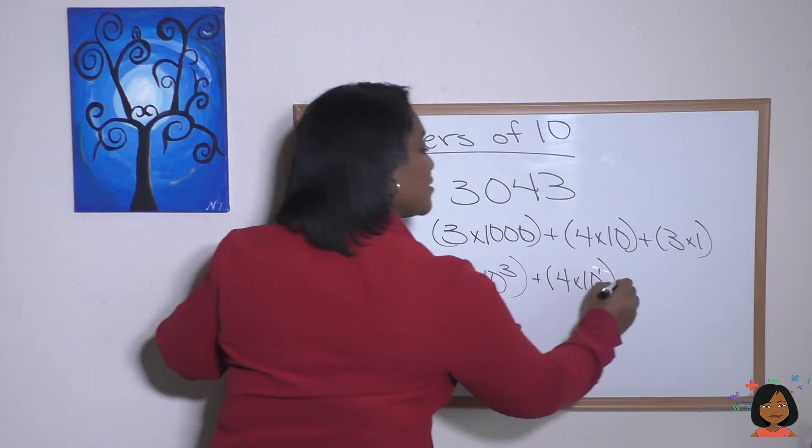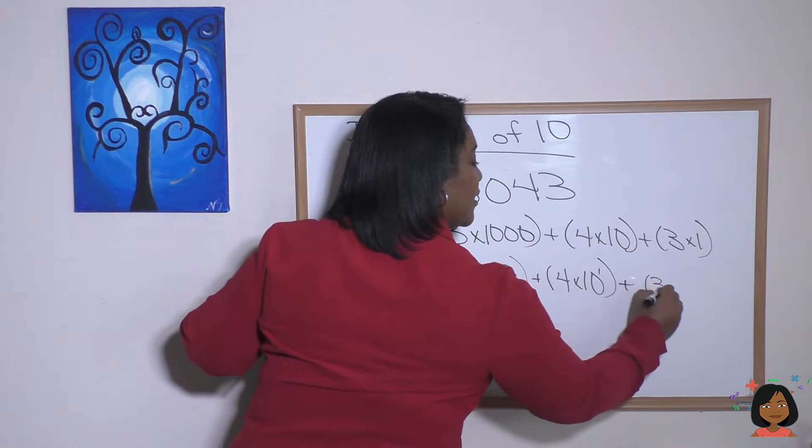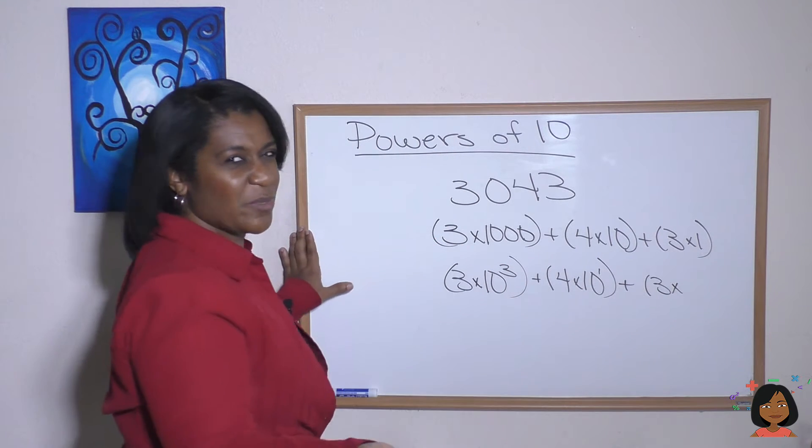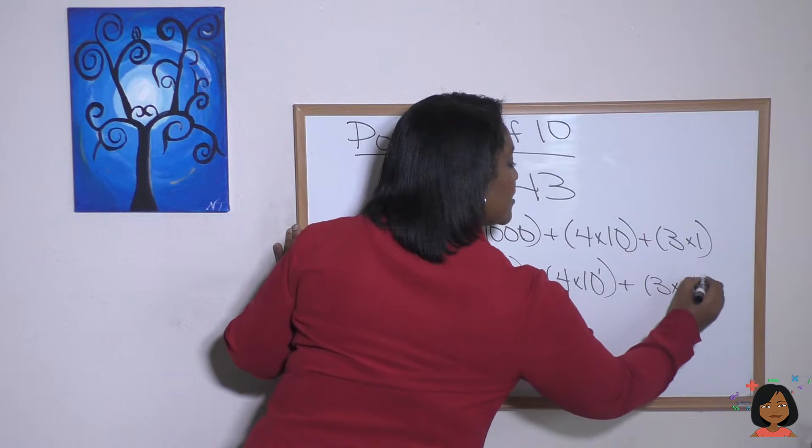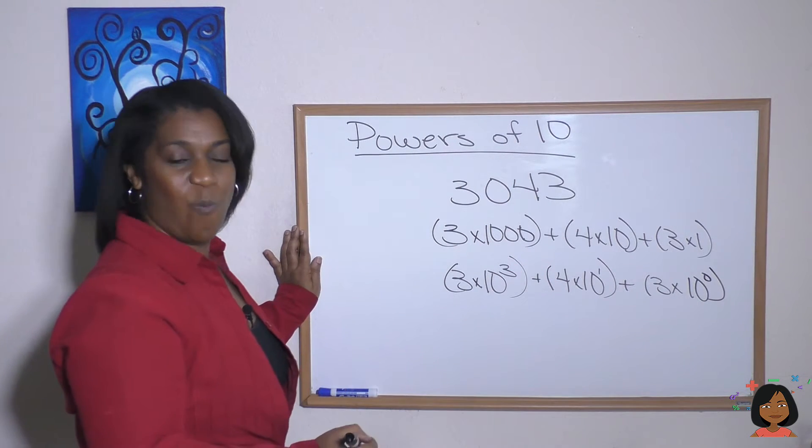plus 3 times. There's no zeros in the number 1, so we're going to say 10 to the 0. 10 to the 0 power is the same thing as saying 1.